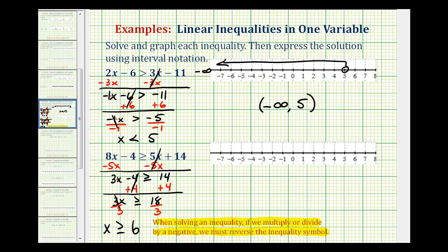And notice in this case, 6 does satisfy this inequality, because 6 is greater than or equal to 6. So to show this graphically, we make a closed point on 6. And then for numbers greater than 6, we draw an arrow to the right.